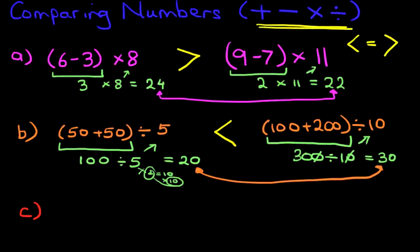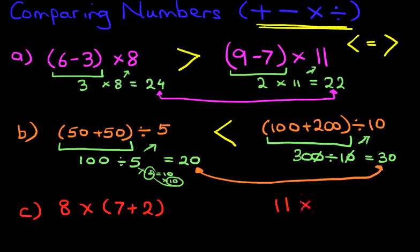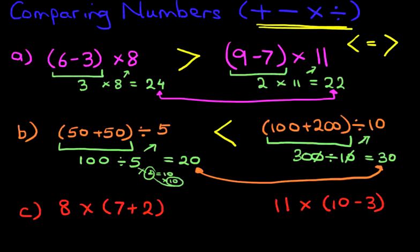We're just going to scroll down a little bit and have a look at one final example. This time we've got addition, subtraction, and multiplication. How do we work out which number is larger and which number is smaller? Let's do this step by step. Look at the set of numbers on the left: 8 times, and then we've got 7 plus 2 in brackets. Do the brackets part first.